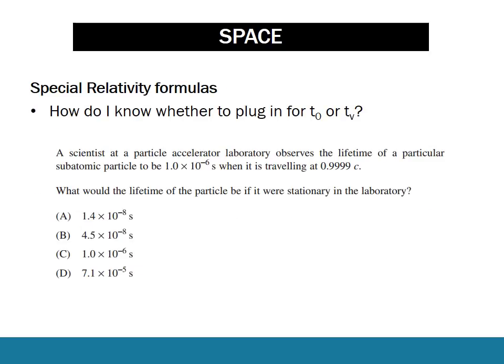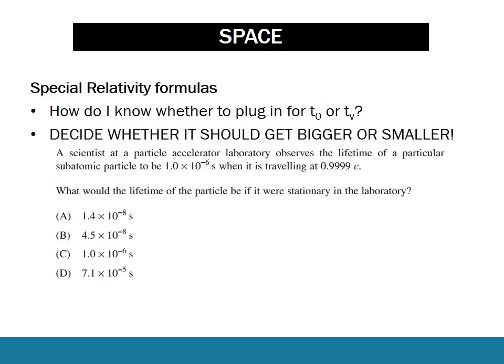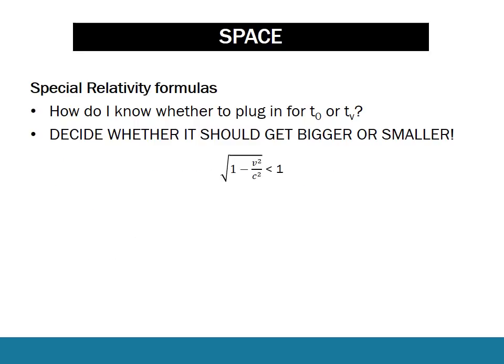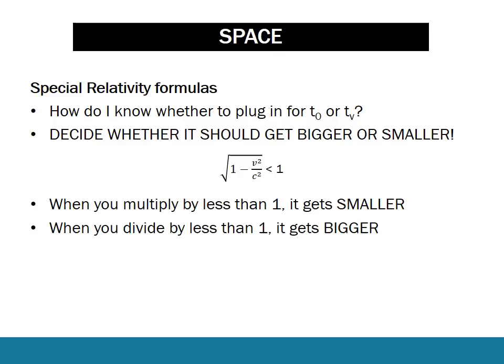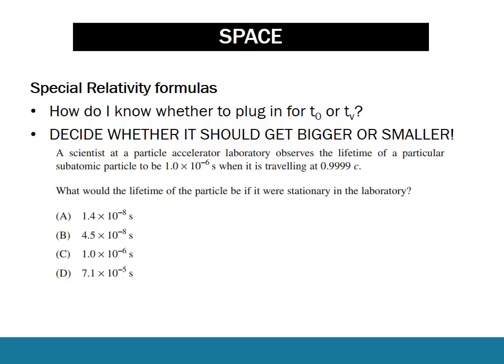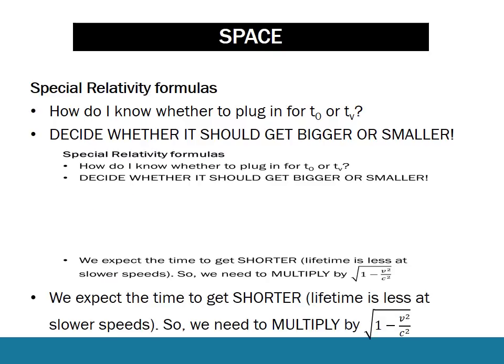A common question is: when using special relativity formulas, how do you know where to plug your values in — is it t₀ or t_v? Rather than just memorizing, think about whether the number you're looking for should get bigger or smaller. The formula always involves root 1 minus v squared on c squared, which is always less than 1. Multiplying by it makes a number smaller; dividing by it makes it bigger. In this example, the lifetime of the particle is greater when traveling quickly, so it's shorter when stationary in the lab — multiply by root 1 minus v squared on c squared to get the answer: 1.4 times 10 to the minus 8.